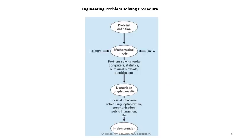The engineering problem-solving procedure typically starts with defining the problem, then building a mathematical model using theory and available primary data. You feed that data into the model, which is solved using problem-solving tools such as computers, statistical methods, numerical methods, or graphical methods, yielding numerical or graphical results from which you draw inferences.